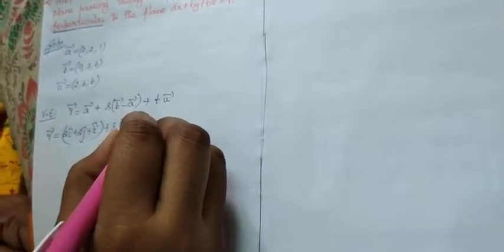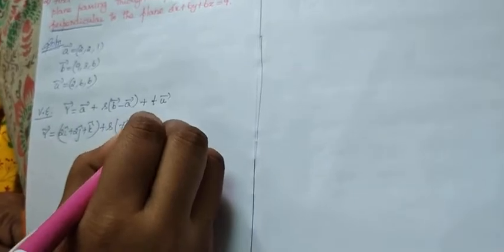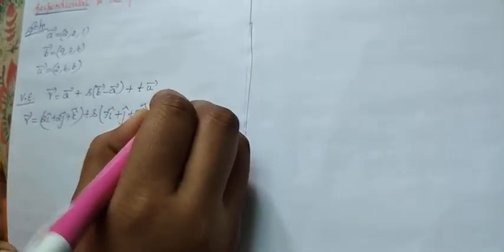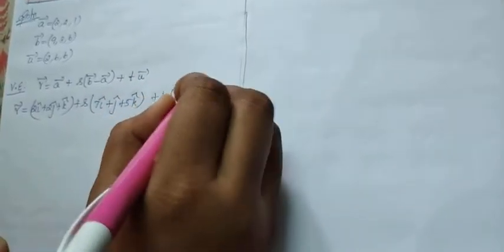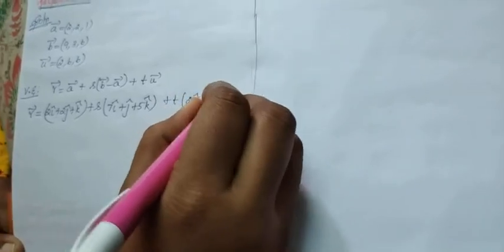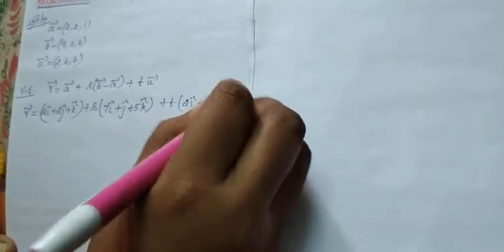What is our answer? 7, (3 minus 2), 1. So 7i plus j vector, (6 minus 1) is 5k vector plus t into our u vector is 2i vector plus 6j vector plus 6k vector. That is our vector equation.